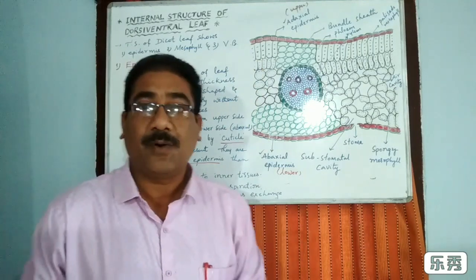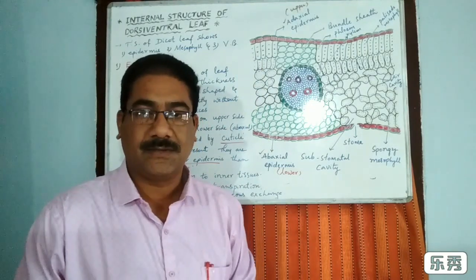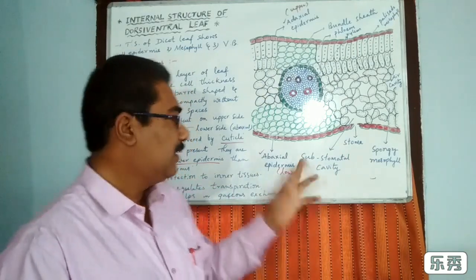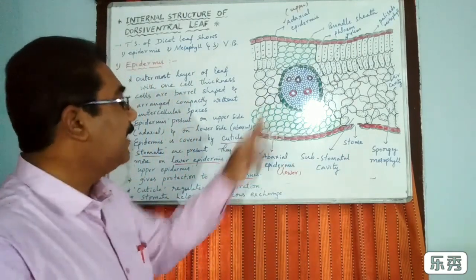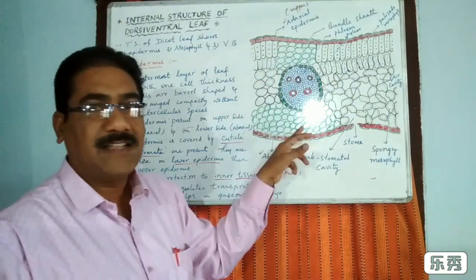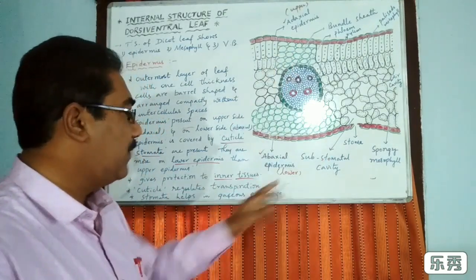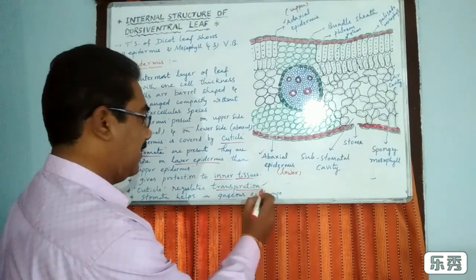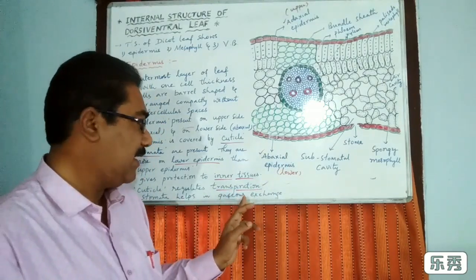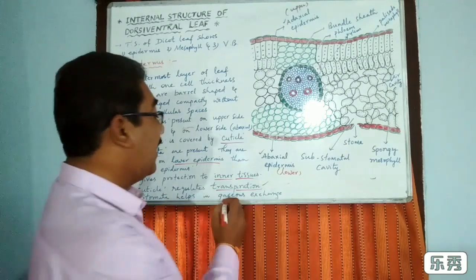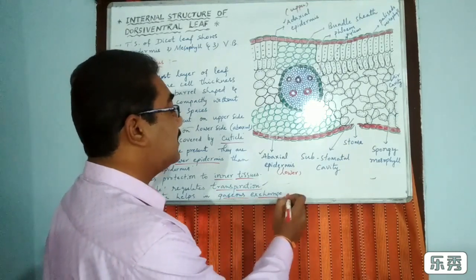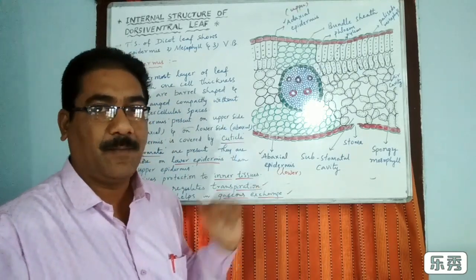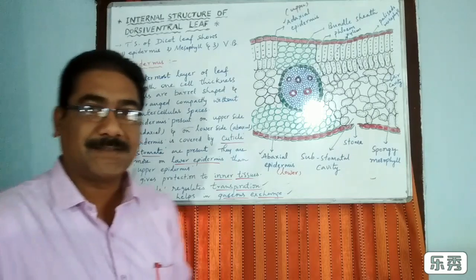Epidermis gives protection to the inner tissues. Cuticle regulates transpiration, and stomata help in gaseous exchange. These are the most important functions of the epidermis.